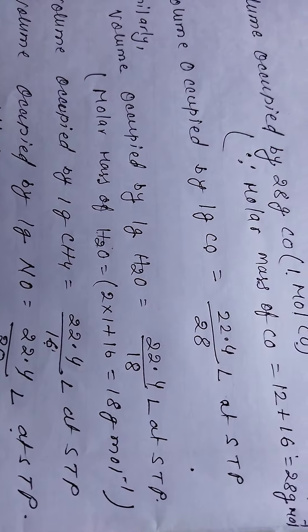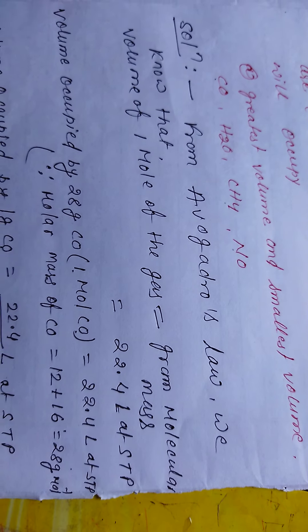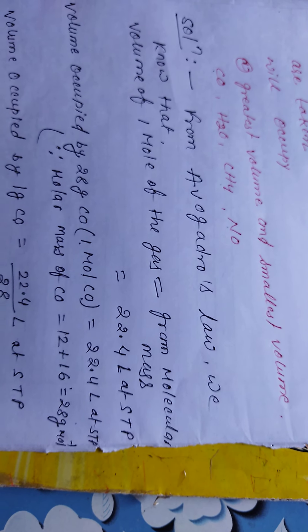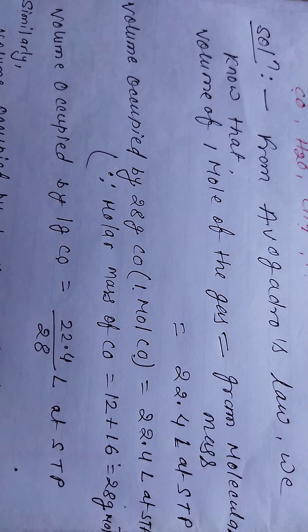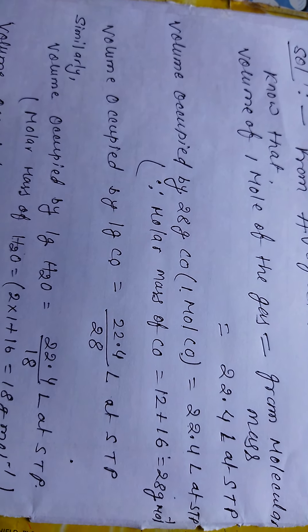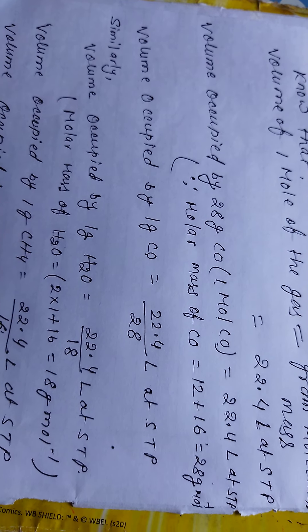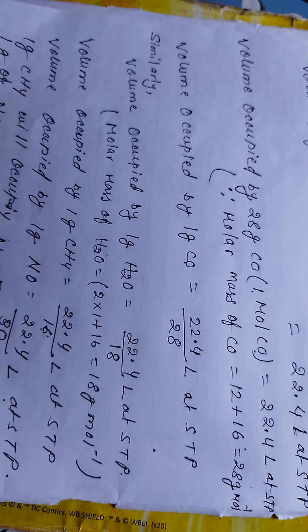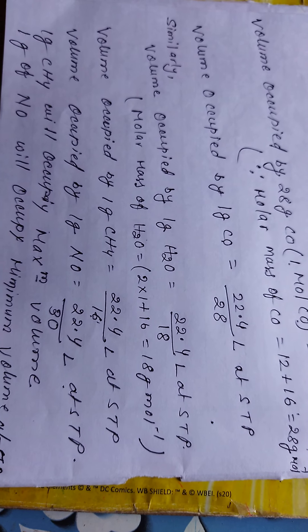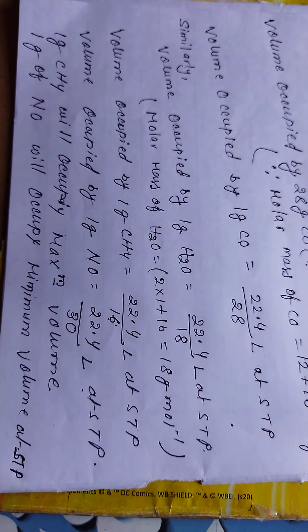In summary, using Avogadro's law, we found that 1 mole of any gas = gram molecular mass = 22.4 liters at STP. We calculated the molecular masses of CO, H₂O, CH₄, and NO, and determined that CH₄ has the maximum volume per gram and NO has the minimum volume per gram. Thank you.